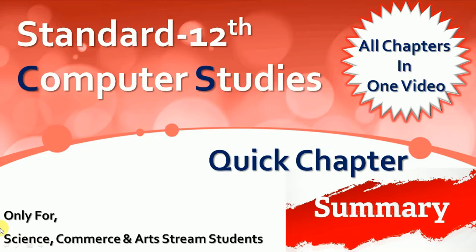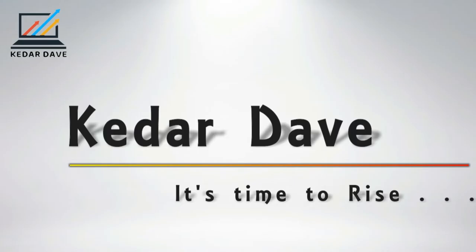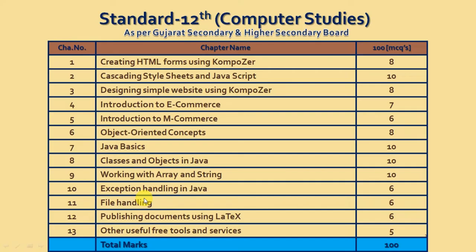This is for standard 12th computer studies, for science, commerce, and art stream students. We learn all chapters with a quick summary. In standard 12, we have a total of 13 chapters. We started with the first chapter.